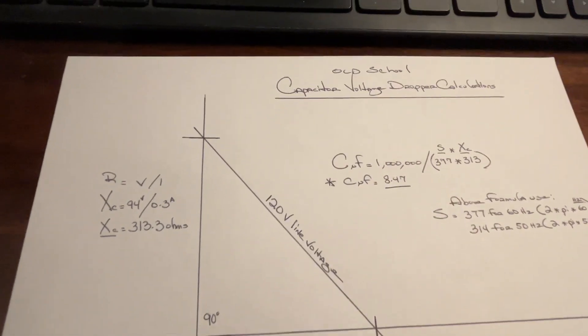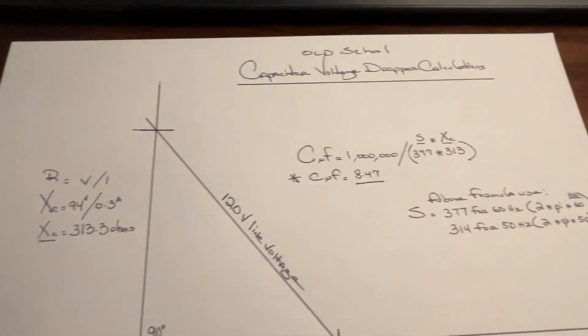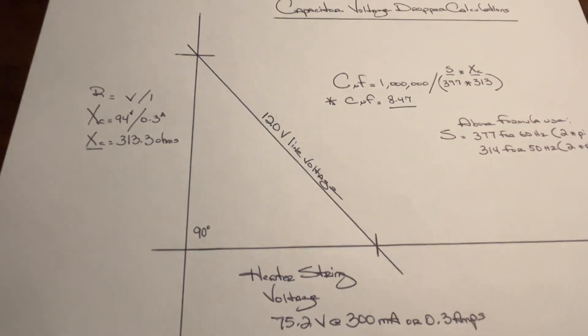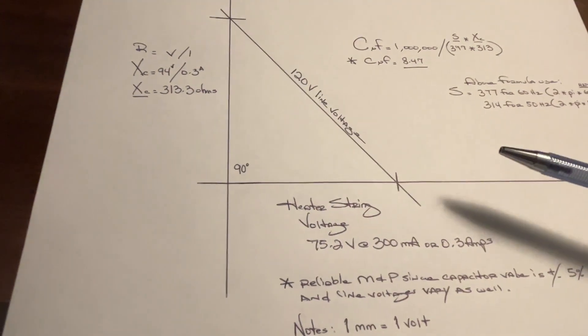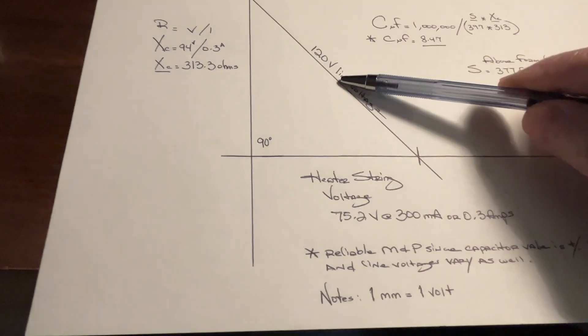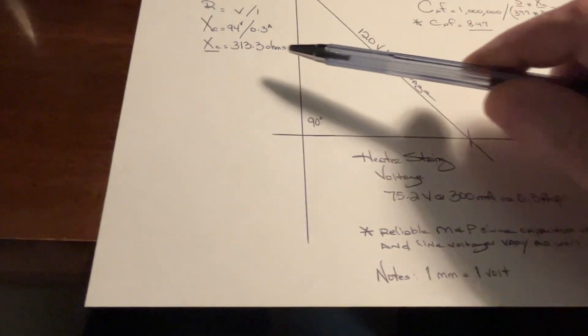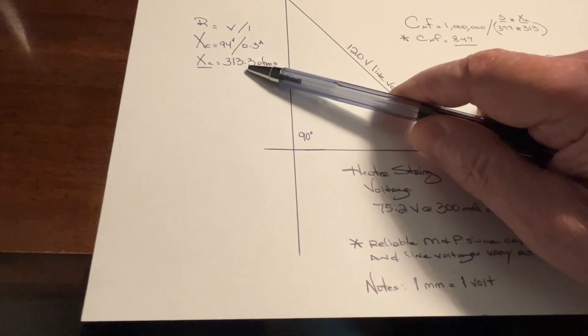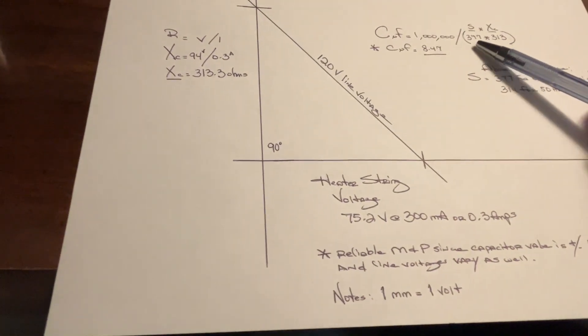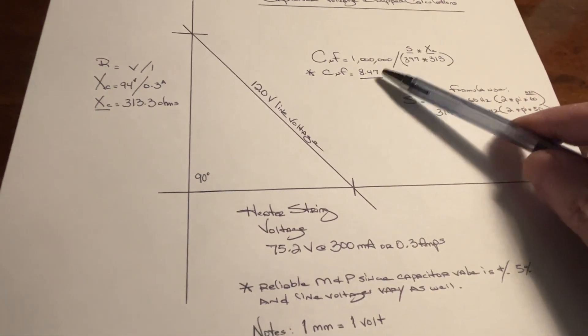So I'm calling it kind of an old-school method and procedure, but it illustrates the out-of-phase relationship between the line voltage and the voltage passing through the capacitor, how to simply do the math,